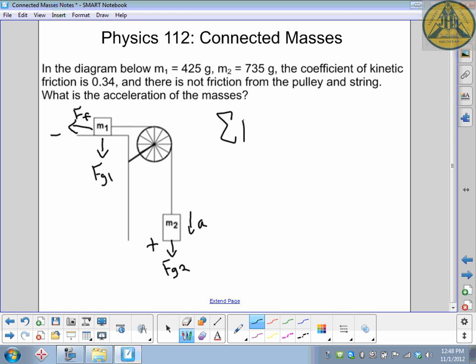So it still comes down to the sum of the forces equals sum of the masses times the acceleration. So in this case, there's only two forces. The force of gravity from mass 2 added to the force of friction. The force of gravity from mass 1 does not come into play. It's perpendicular to the direction of motion.